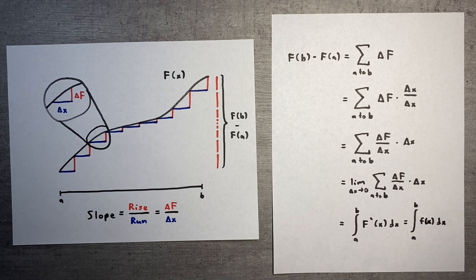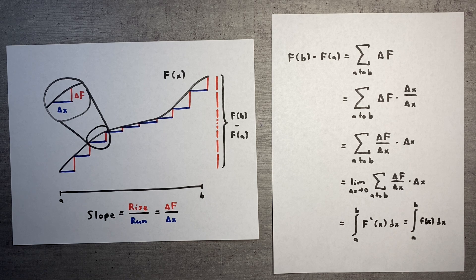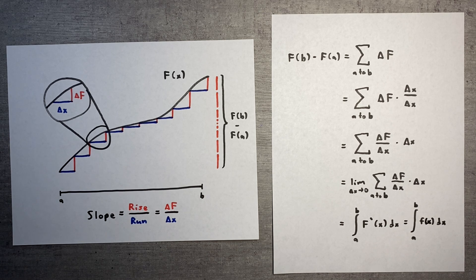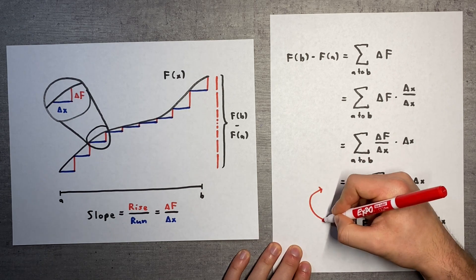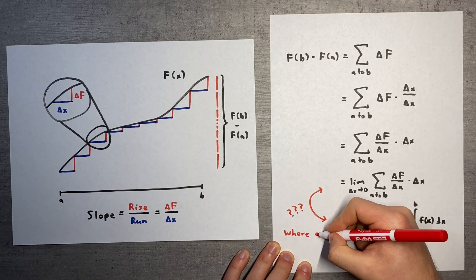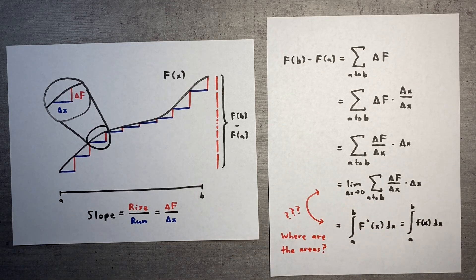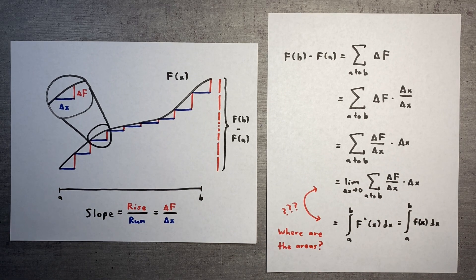I think this explanation is a great way to see how the relationship between derivatives and integrals leads to the theorem, but it still doesn't directly explain how areas are involved. This is why the last step about the sum turning into an integral feels somewhat unwarranted. Let's address this flaw by actually finding the area under a curve in our third proof.